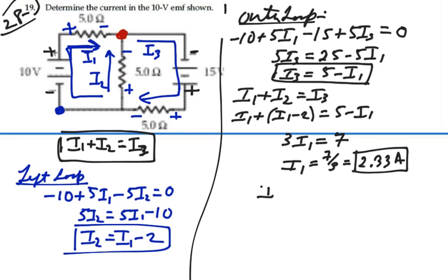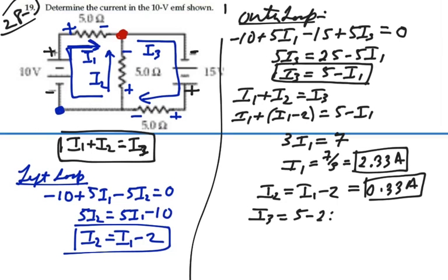Just for curiosity's sake, I2 is I1 minus 2, so that would be 0.33 amps. And I3 is 5 minus I1, which is 2.67 amps.